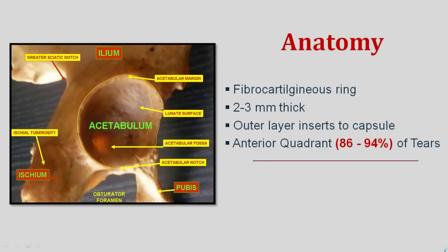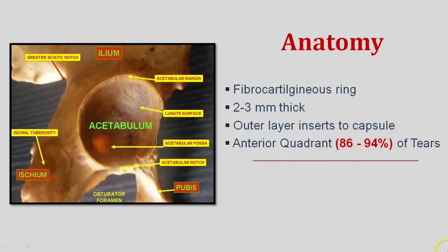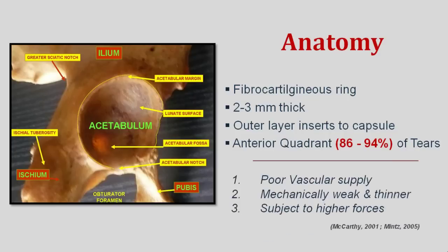A short look at the anatomy. The acetabular labrum is a fibrocartilaginous structure that outlines the acetabulum socket. It goes all around and is completed in the inferior region by the transverse acetabular ligament. The thickness can vary, normally around two to three millimeters. The outer layer inserts into the capsule. A key clinical tip: about 86 to 94 percent of tears happen in the anterior quadrant, possibly due to poor vascular supply, as it is mechanically weak, thinner, and subject to higher forces.